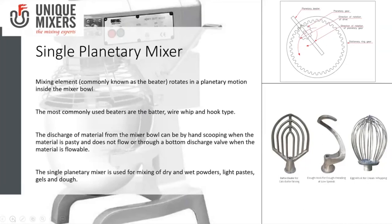The discharge of material from a planetary mixer or bowl can be by manual scooping when it comes to pasty materials that do not flow. For materials which are flowable, they can be discharged using a bottom valve. The single planetary mixer is used for mixing of dry and wet powders, light paste, gels, and dumps.